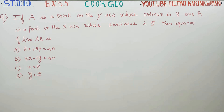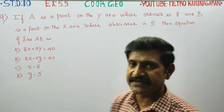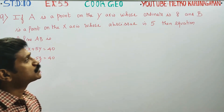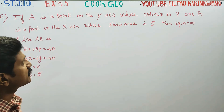Dear 10th standard students, in Exercise 5.5, Coordinate Geometry, your one more question — Sum number 9. If A is a point on the y-axis whose ordinate is 8, and B is a point on the x-axis whose abscissa is 5.